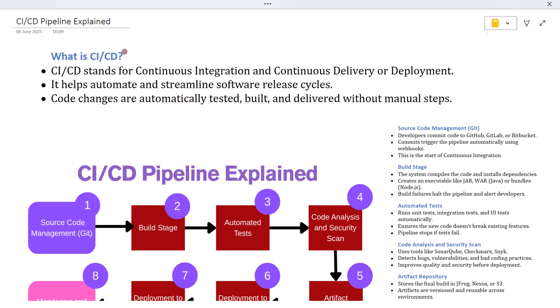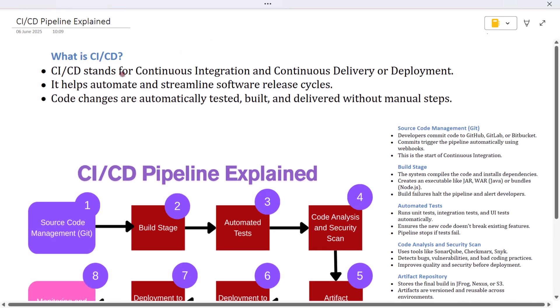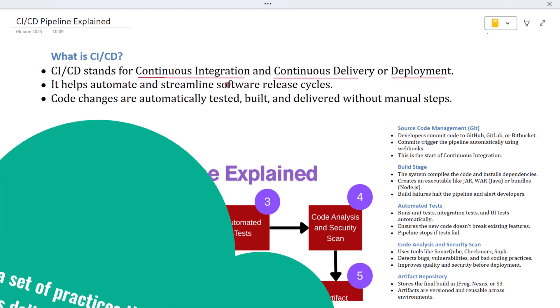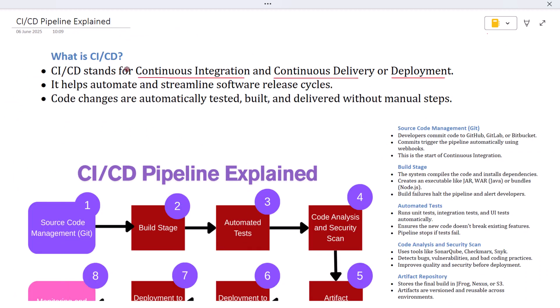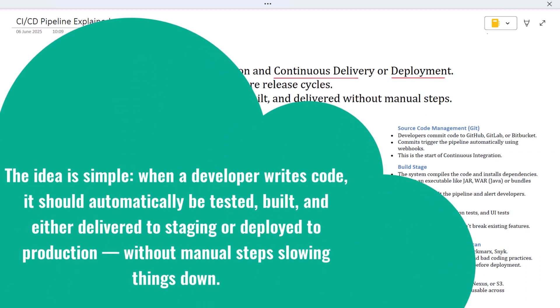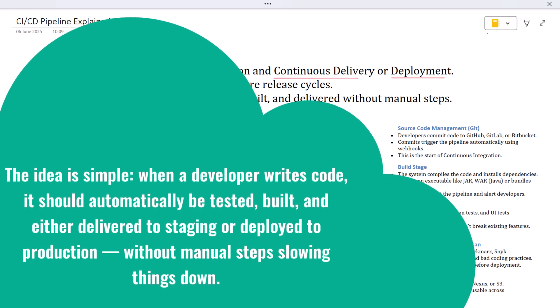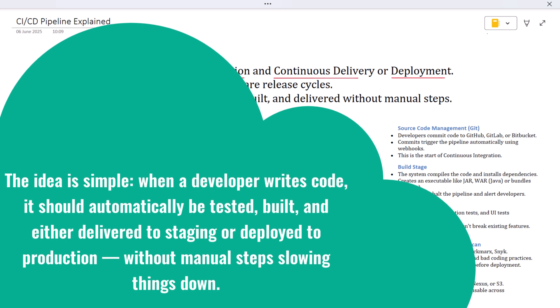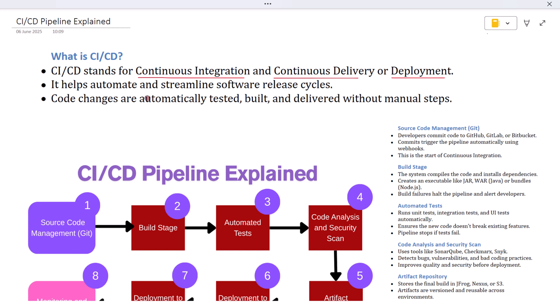So let's start with the big picture and then walk through each stage in the pipeline. CI/CD stands for Continuous Integration and Continuous Delivery or Continuous Deployment. It's a set of practices that help development teams deliver code changes more frequently and reliably. The idea is simple: when a developer writes code, it should automatically be tested, built, and either delivered to staging or deployed to production without manual steps slowing things down.